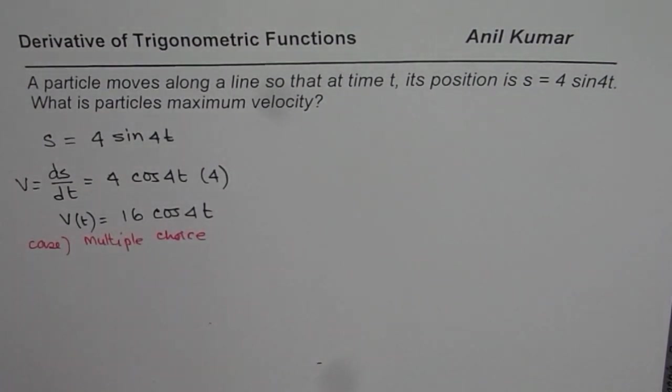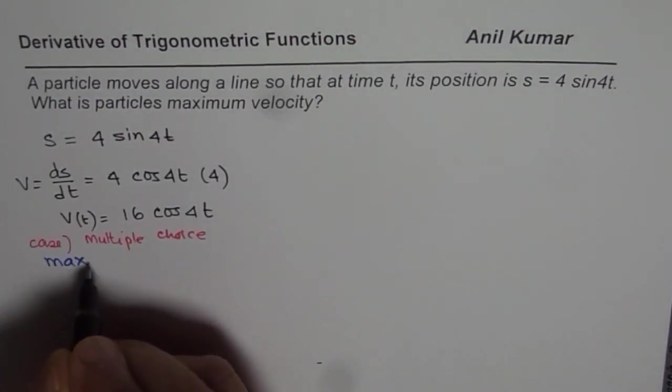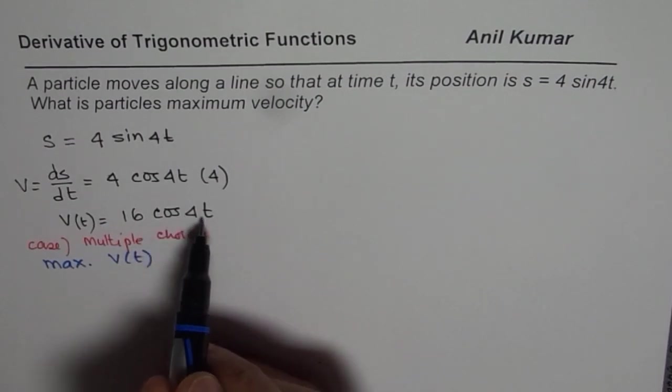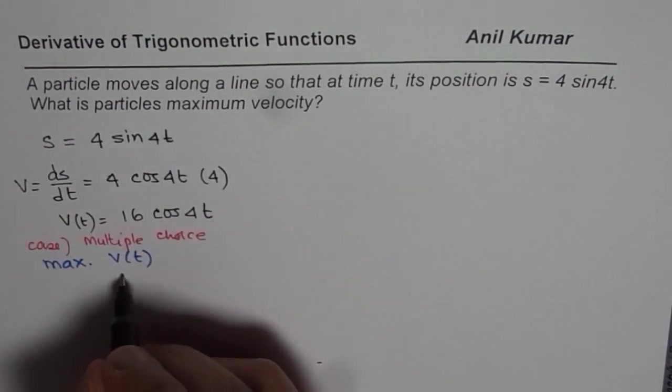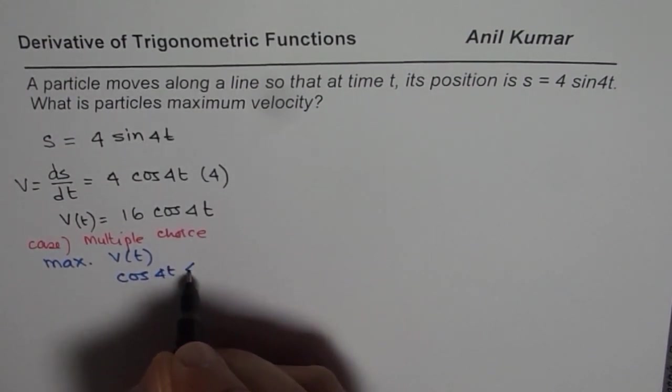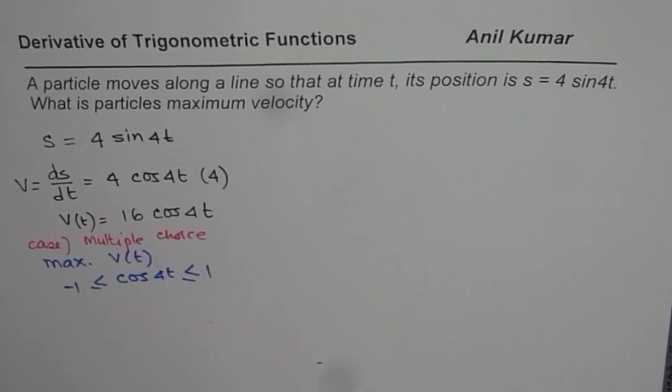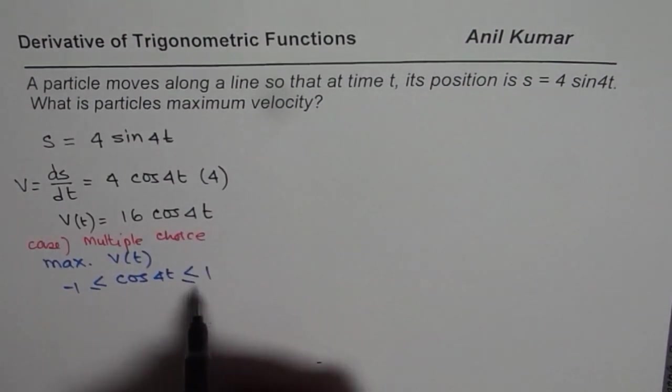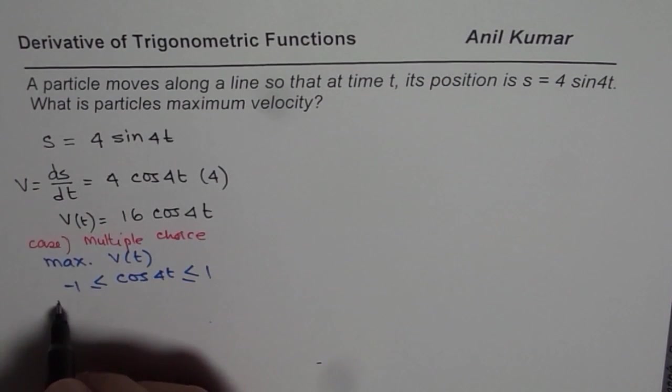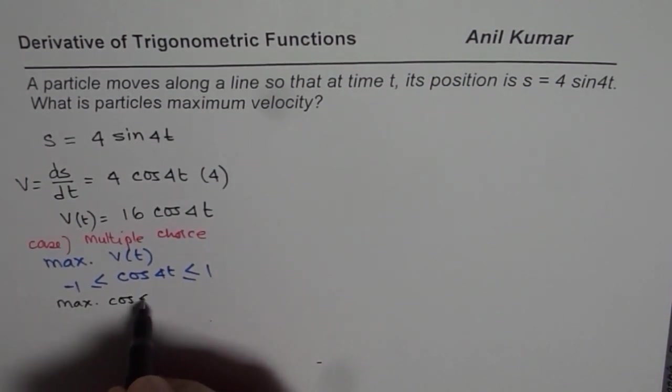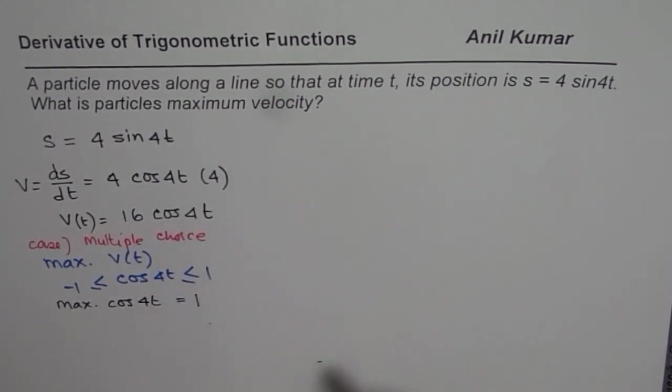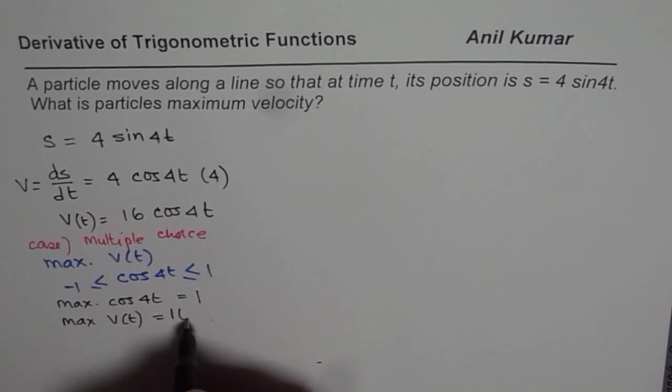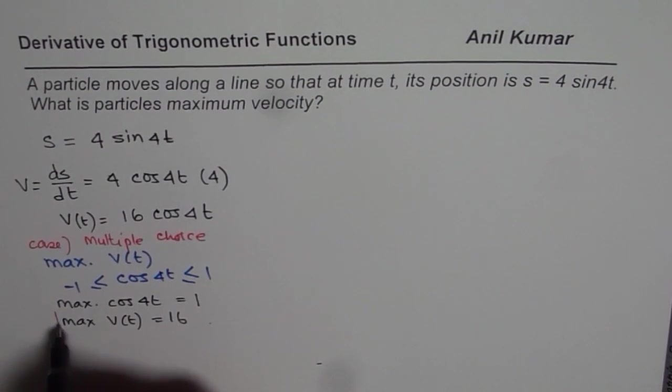Remember one thing: we are looking for maximum velocity. Now we have 16 times cos of 4t. What is the maximum value of cos of 4t? We know cos of 4t is between plus and minus 1. So the maximum value it can take is indeed 1. So maximum for cos of 4t is 1, and based on that we can say maximum velocity can be 16. So we get straight away our answer, maximum velocity is 16.